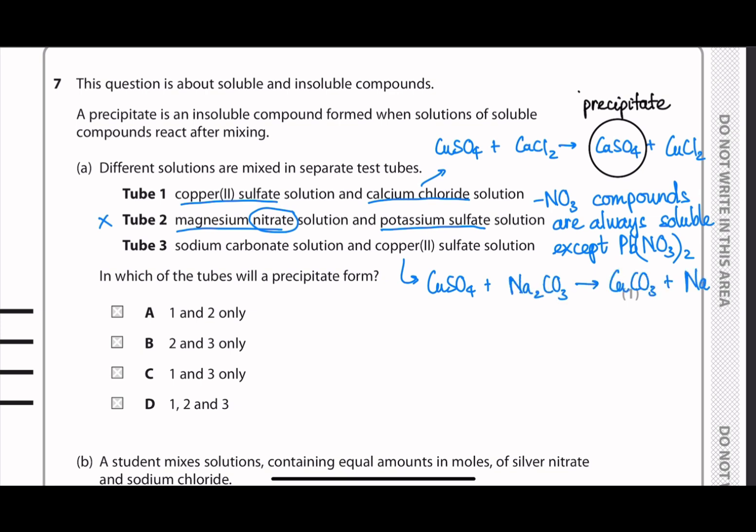And in tube 3, if we write the equation again, we have copper sulfate react with sodium carbonate. The product we'll get is copper carbonate. And most of the carbonate compounds are insoluble. So it will produce precipitate. And the answer in this question will be tube 1 and 3, which is answer C.